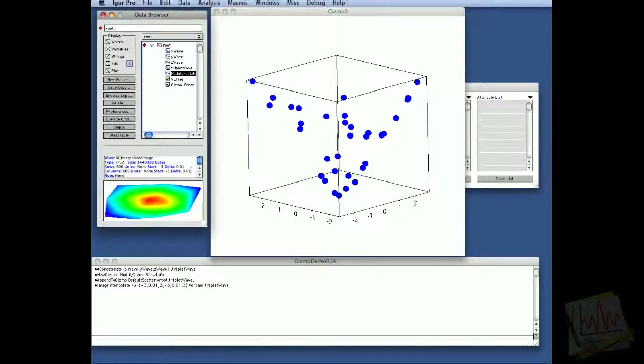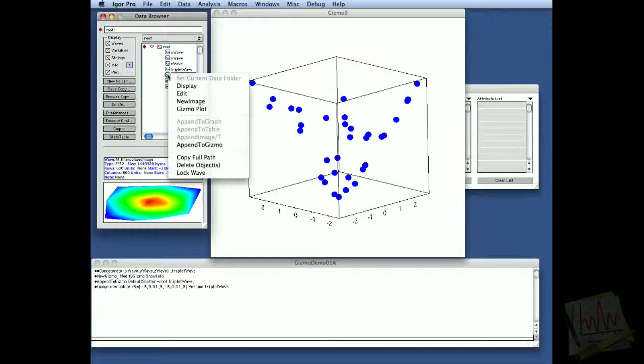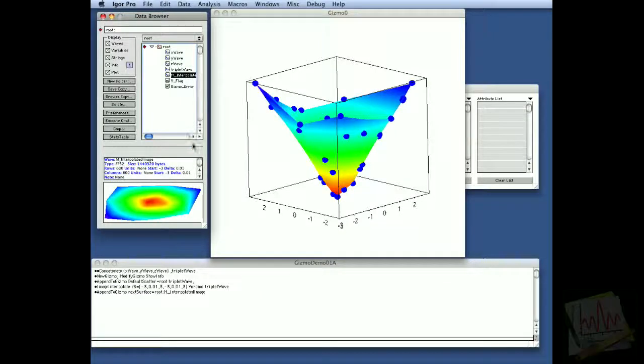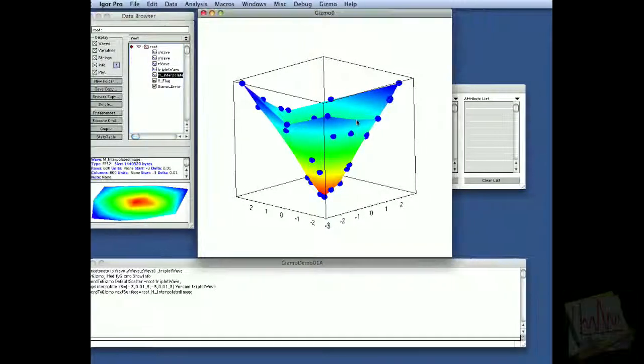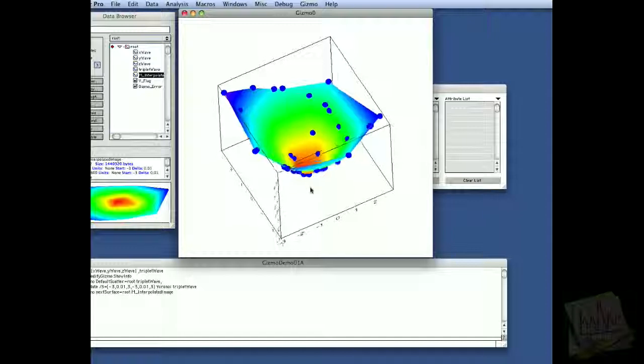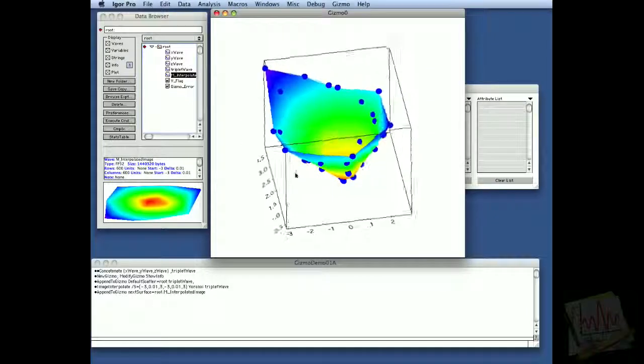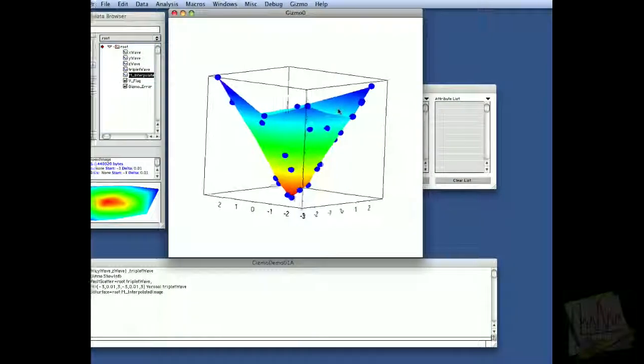Now let's go ahead and just append this image or this surface to Gizmo. This is a 2D wave now at 600 points by 600 points, and I'm going to right-click on its icon and choose Append to Gizmo. And what we got here is a surface that goes through the scatter points that we had earlier.